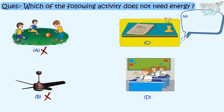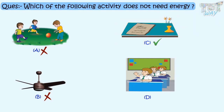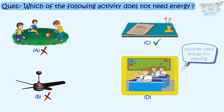Third, a book lying on the table — do you think it needs energy to lie on the table? No, a book doesn't require any energy to lie on the table. The fourth is a boy reading a book — he definitely needs energy to read. So our answer is option C: the book lying on the table.